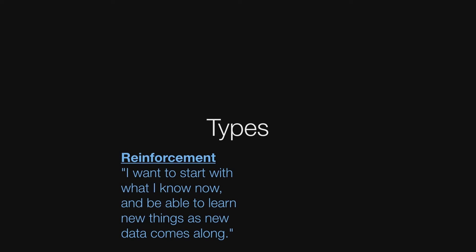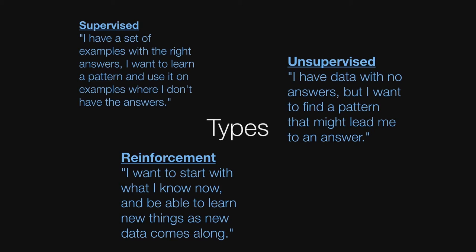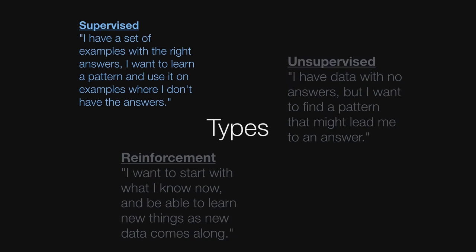The third type is called Reinforcement. Reinforcement is: I'm going to start with knowing a specific thing right now, and as new data comes in, I'm going to alter just ever so slightly what I know so that I'm better aligned with the most recently seen information. This should be near and dear to our hearts — this is how most of us learned as small children. Out of all three, unsupervised and reinforcement are the least mature fields, so we're going to talk about supervised first — by a very large margin the most well-defined field in this area.